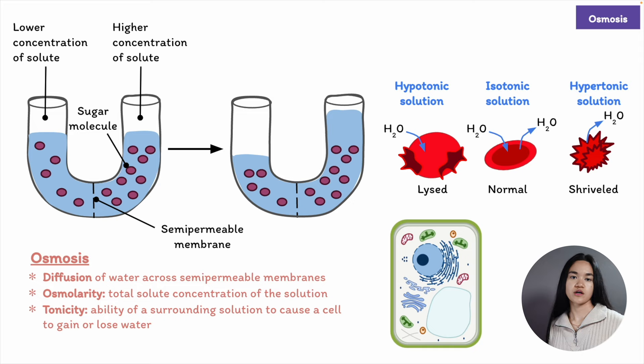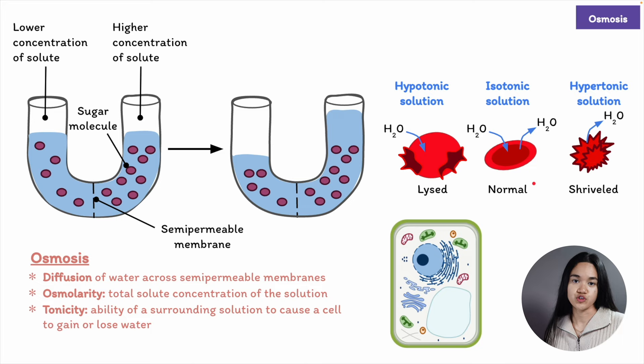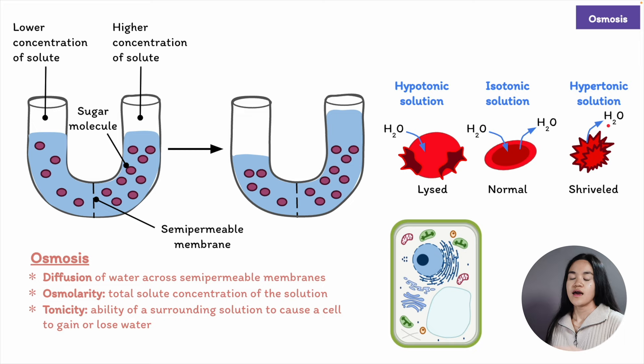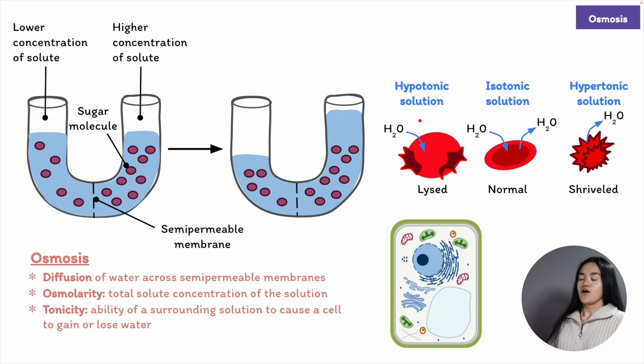Quick recap: Isotonic (iso meaning same) — a solution that does not cause a change in cell volume; equal solute concentrations. Hypertonic (hyper meaning more) — a solution that causes a cell to shrink; there's a higher concentration of solute. Hypotonic — a solution that causes a cell to swell; hypo means low, there's a lower concentration of solute.